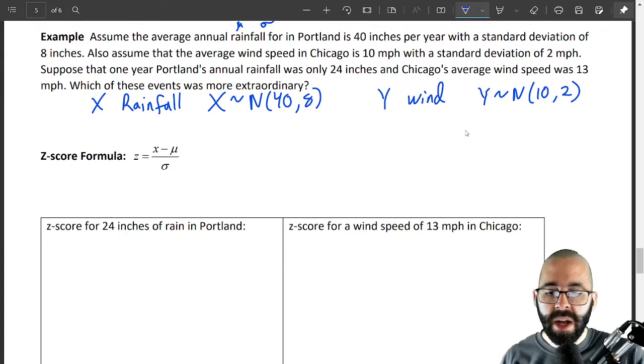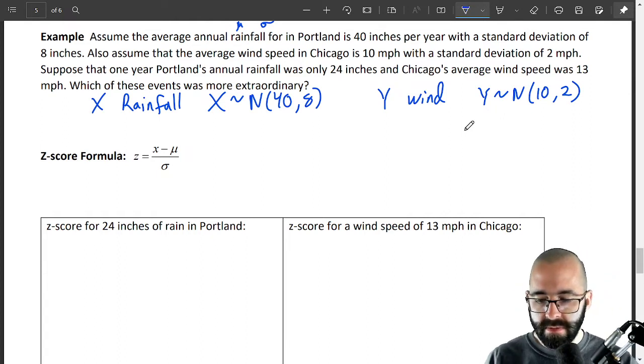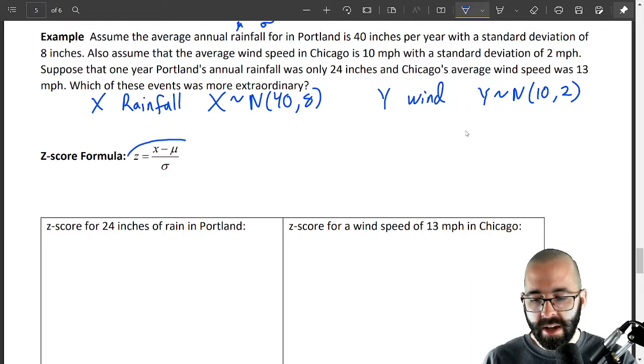And how we're going to compare these is just say, well, what is further from the mean? What is a higher standard deviation? What is more standard deviations away from the mean? And we're going to do that by using this formula. This converts it to our standard normal variable, this formula right here.